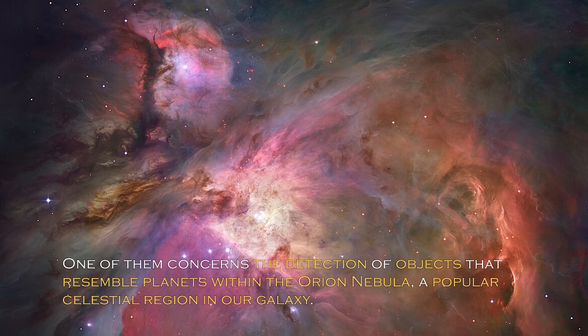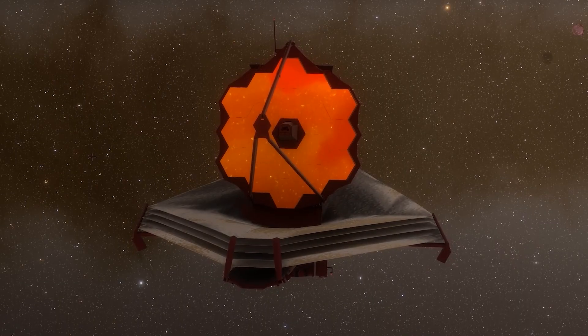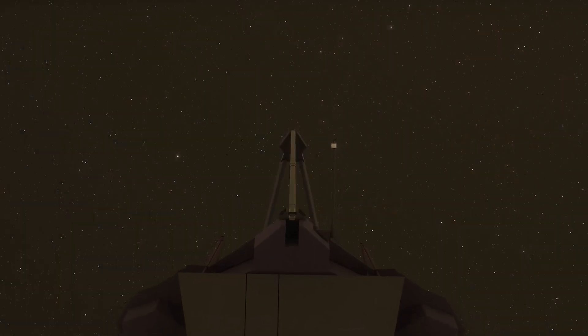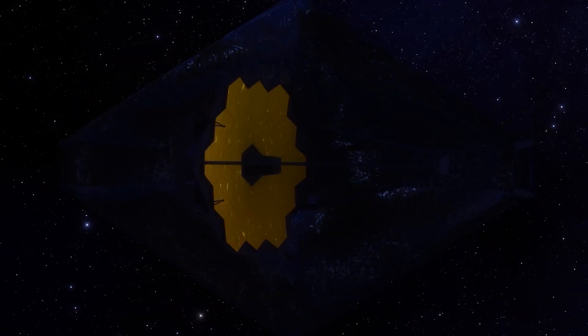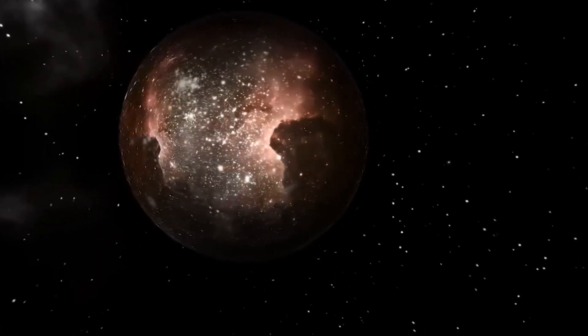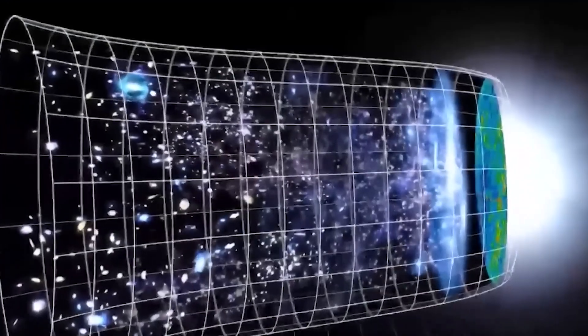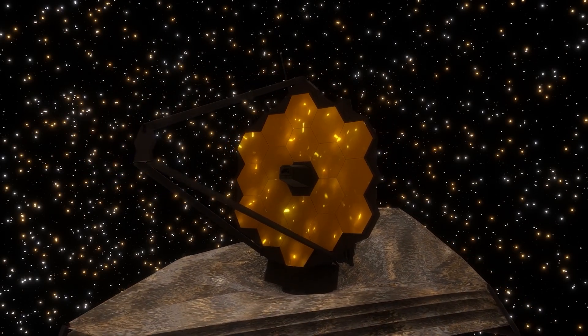The James Webb telescope has recently made remarkable discoveries. One of them concerns the detection of objects that resemble planets within the Orion Nebula, a popular celestial region in our galaxy. Previous studies had not revealed such objects in this cosmic cloud of dust and gas until the James Webb made their detection possible. However, one of the discoveries is particularly disturbing — it significantly challenged our established understanding of cosmology and astronomy, and could call into question the validity of the Big Bang theory. What exactly did the James Webb telescope discover and why is its finding creating such a shock to the foundation of cosmology and astronomy?